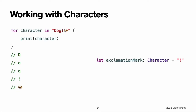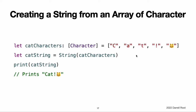Working with characters. You can access the individual character values for a string by iterating over the string with a for-in loop. The for-in loop is described in for-in loops. Alternatively, you can create a standalone character constant or variable from a single character string literal by providing a Character type annotation. String values can be constructed by passing an array of character values as an argument to its initializer.